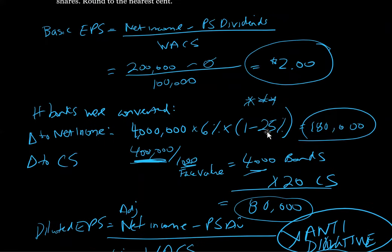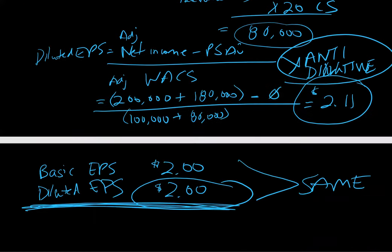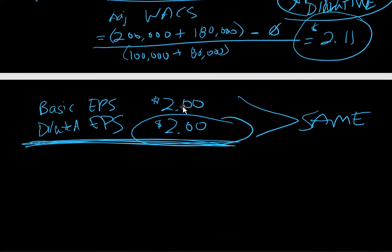Something really important to watch for: still go through all the calculations, and then always make sure that your basic earnings per share is higher than your diluted earnings per share. If diluted EPS is higher, simply report the same basic earnings per share as the diluted earnings per share. That's the key takeaway here.